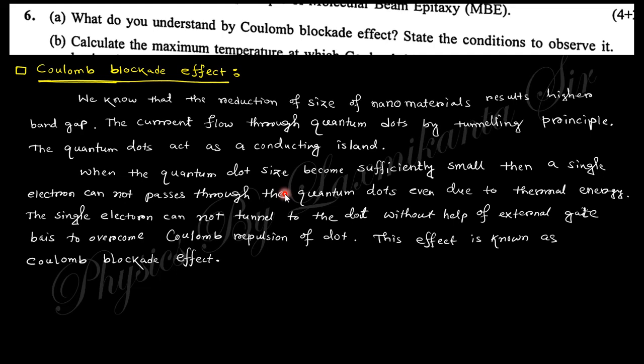At the quantum dot, the band gap is high. So the conduction from one thin film to another thin film through the quantum dot, you need to tunnel - that is quantum tunneling happening here. But sometimes quantum dots are sufficiently small, then a single electron cannot pass through this quantum dot even through the tunneling effect.